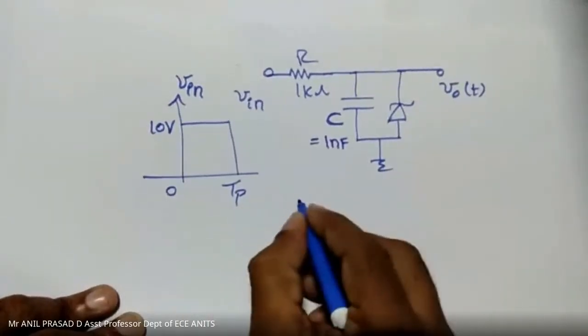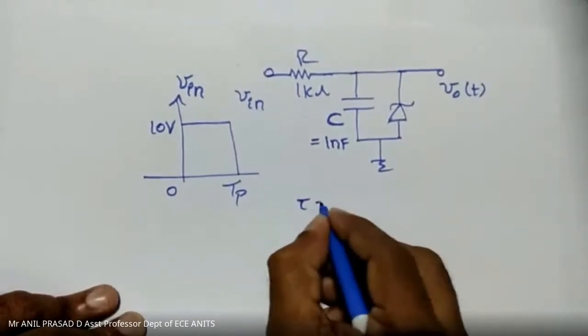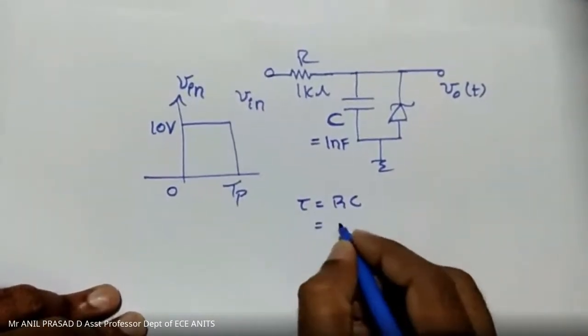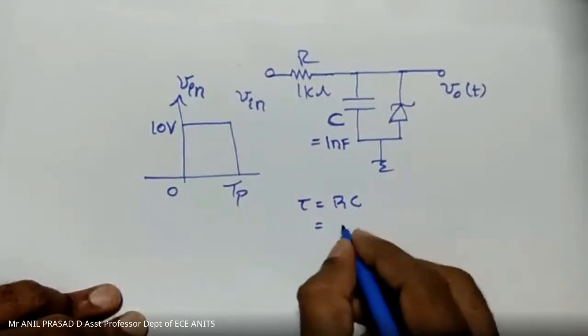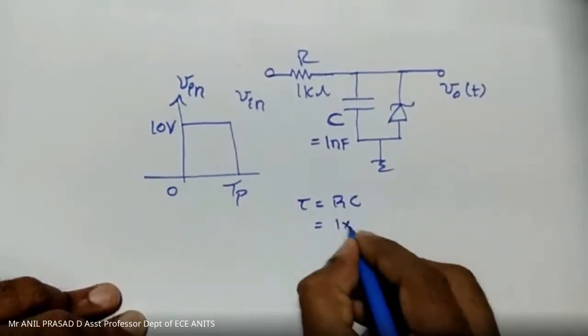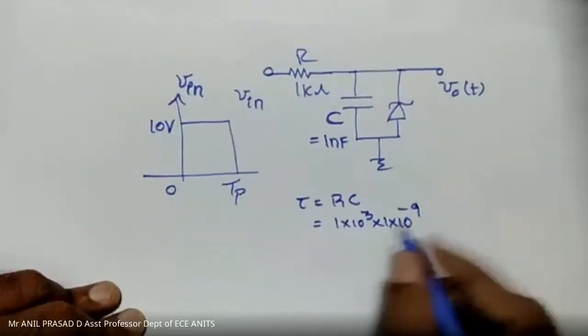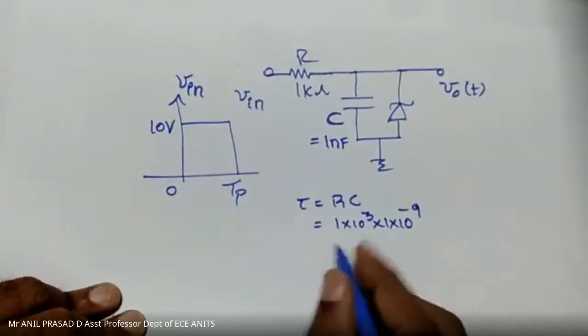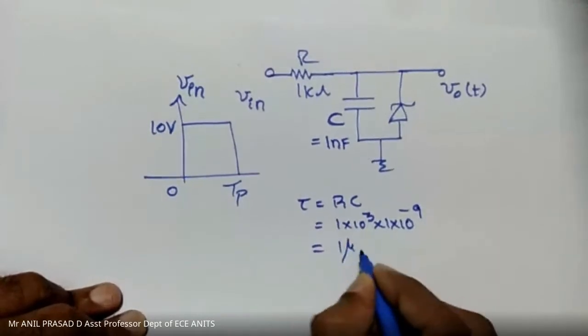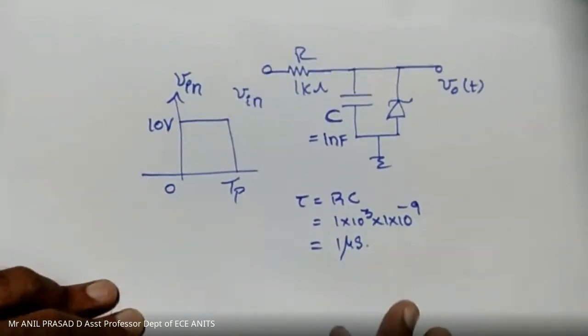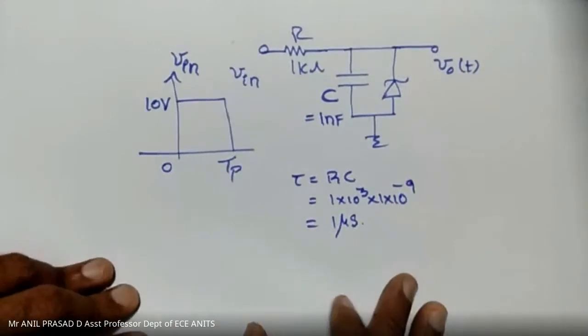Tau is given as RC. So how much is tau? 1 kilo ohm into 1 nano... nano means 10 to the power of minus 9. So 1 microsecond. Tau is given as 1 microsecond.